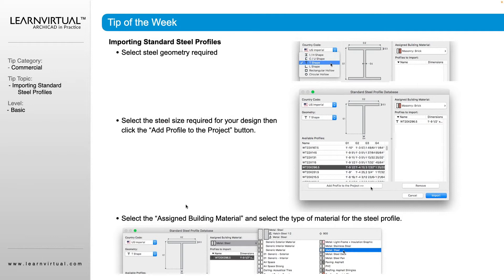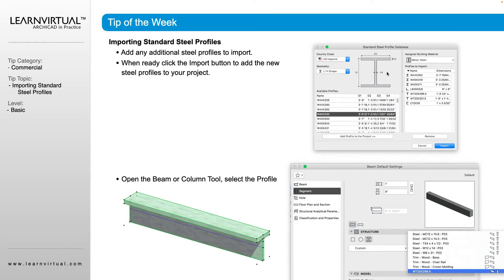It's going to give us a preview and the specs for that profile, and then we say Add the Profile to the Project. We assign a building material — you have all of your project's building materials to choose from. You can also add any additional steel profiles; if you have more than one to bring in, you can add multiple at a time. When you're all done, you click Import.